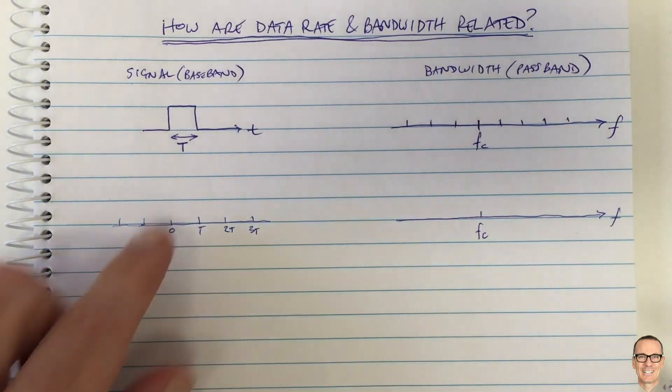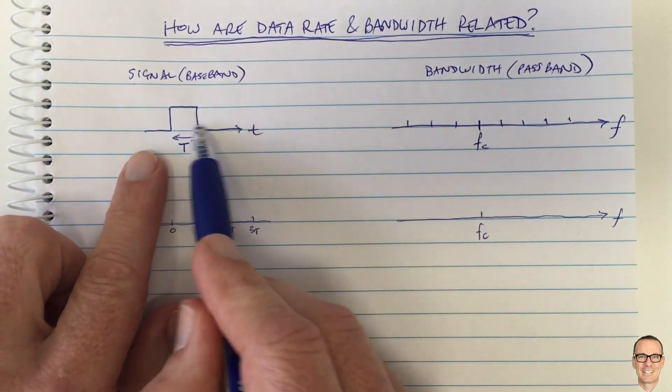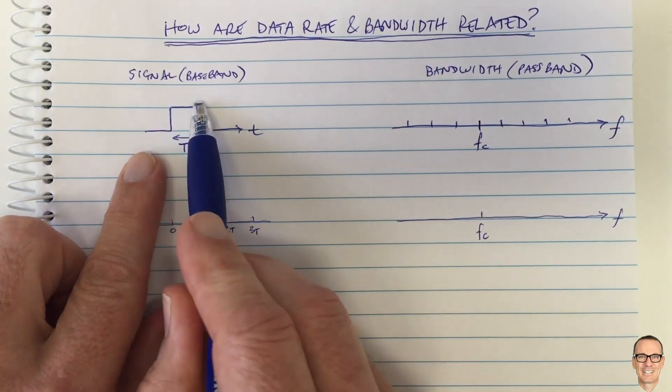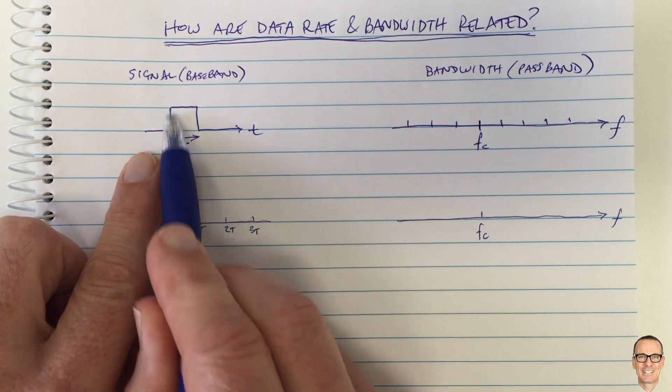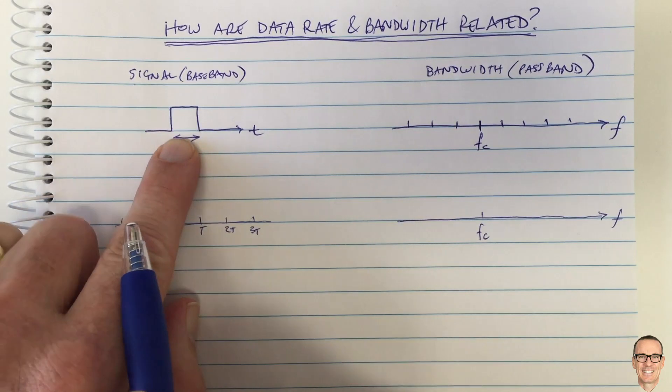Let's look at the relationship. Let's take our baseband signal and consider this waveform where we want to switch it on and switch it off very quickly to represent a digital one in this case.